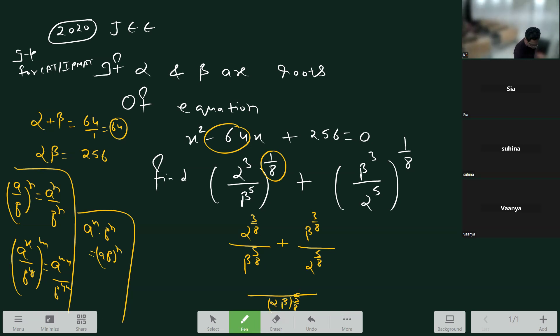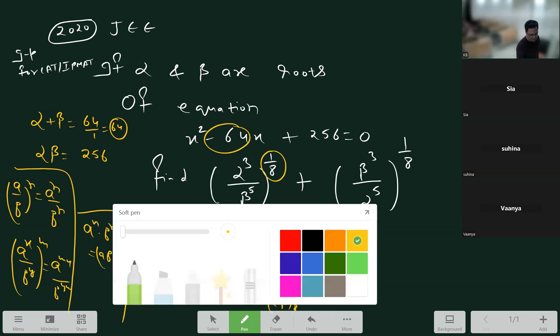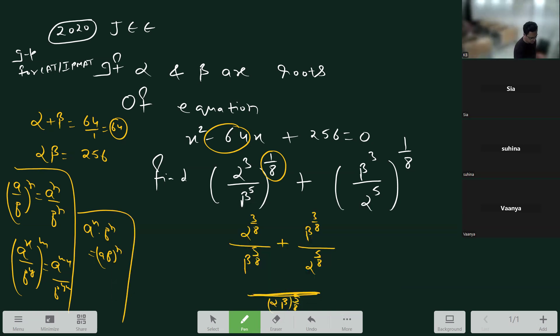This denominator is the same, I'll be careful. If this 5 by 8 is lower, it will be alpha to the 5 by 8. How will it be? Alpha 3 by 8. Alpha 5 by 8 into alpha 3 by 8 gives alpha 8 by 8. Alpha 6 by 8 into alpha 3 by 8 into alpha 5 by 8, that's normal.